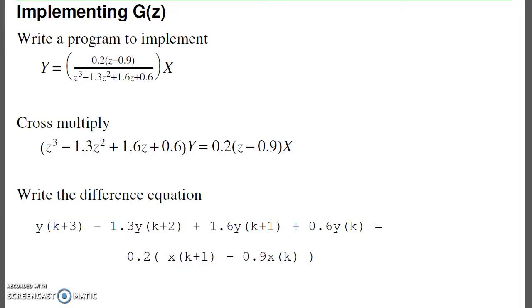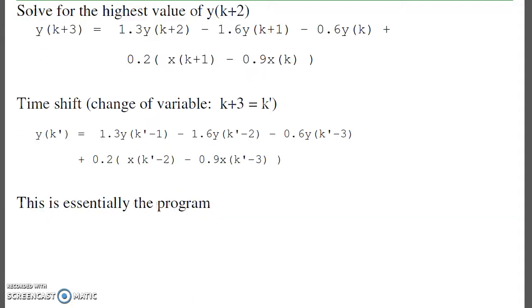If I want to implement a filter, the whole reason we're doing this is it's much easier to implement filters in the z-plane than the s-plane. What I do is cross-multiply and solve for the highest power of z. This gives me y(k+3)—y three samples in the future—in terms of other values. Solve for the highest power, do a time shift, and the output at time k is a function of previous outputs and previous inputs. That's essentially the program you use to implement your filter.